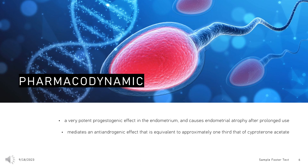Dienogest exhibits a very potent progestogenic effect in the endometrium and causes endometrial atrophy after prolonged use. It also mediates an antiandrogenic effect equivalent to approximately one-third that of cyproterone acetate. A dose of 2 mg inhibits growth of ovarian follicles at 10 mm and maintains progesterone at a low level, but has a weak inhibitory effect on FSH and LH. 1 mg/kg also directly inhibits ovulation. In clinical trials with endometriosis patients, Dienogest therapy effectively reduced painful symptoms and endometriotic lesions.